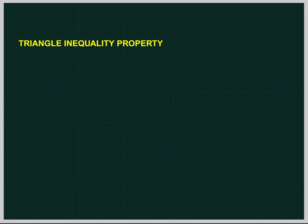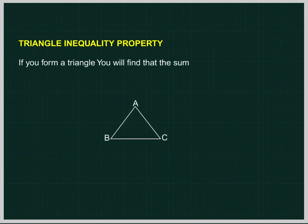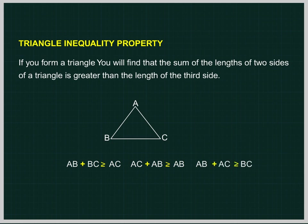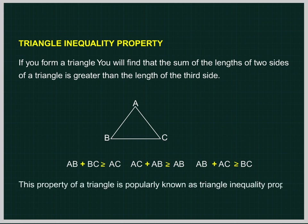Triangle Inequality Property. If you form a triangle, you will find that the sum of the lengths of any two sides of the triangle is greater than the length of the third side. In triangle ABC: AB plus BC is greater than AC; AC plus BC is greater than AB; AB plus AC is greater than BC. This property is known as the triangle inequality property.